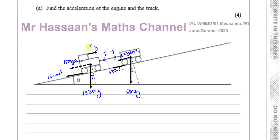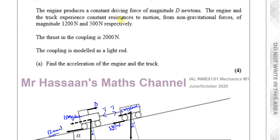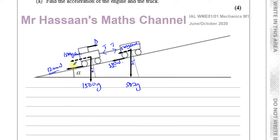The only way the perpendicular forces would affect the motion is via friction using F equals mu R. However, the friction and all other resistive forces like air resistance are already factored into the given resistance values — 1,200 N for the engine and 500 N for the truck. So we don't need to worry about finding the reaction force or computing friction separately.